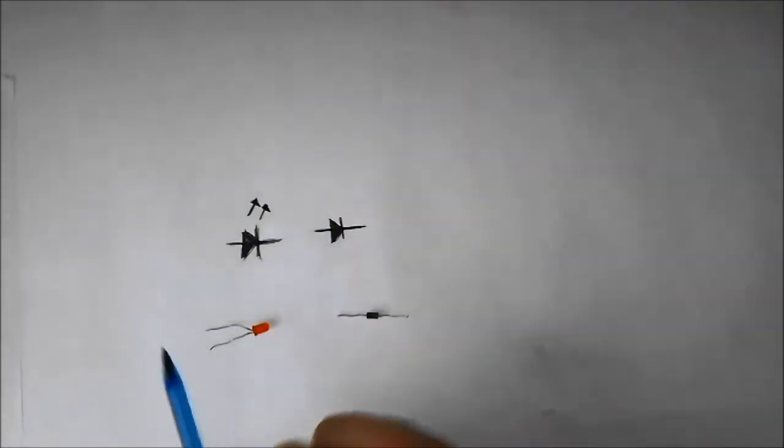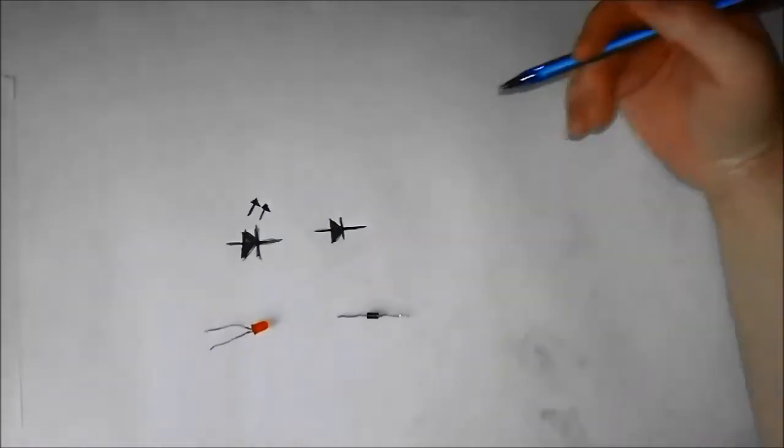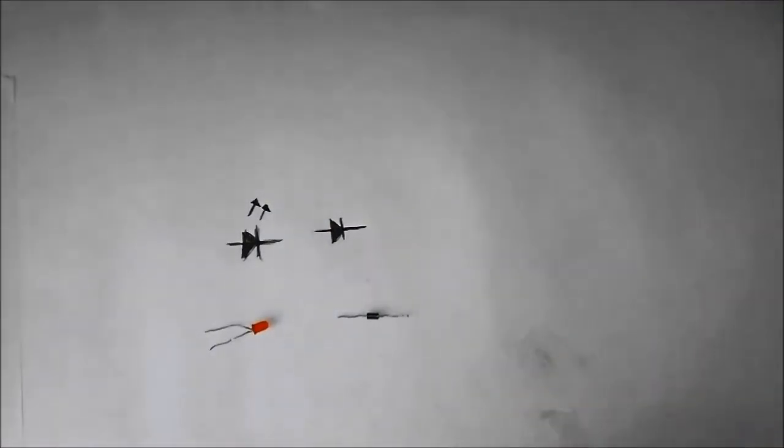That is the circuit symbol for an LED. Notice the two arrows pointing away from the LED. That means it's emitting light, hence the name Light Emitting Diode.